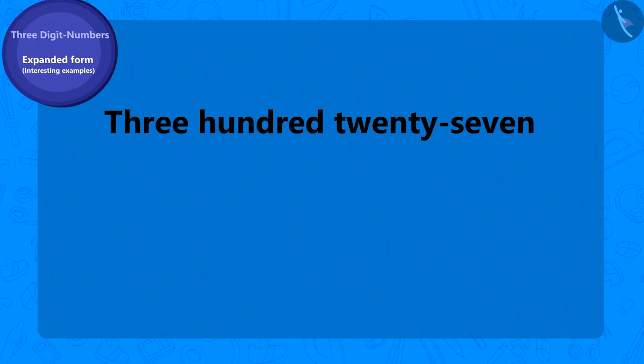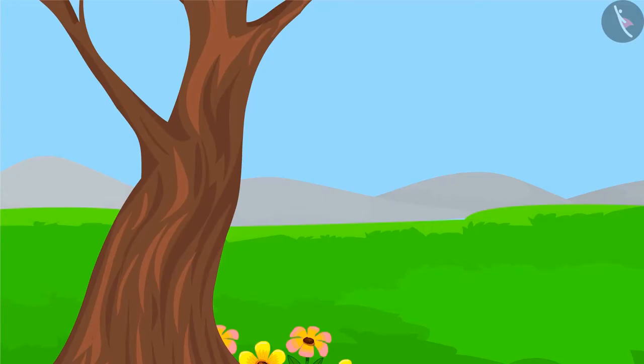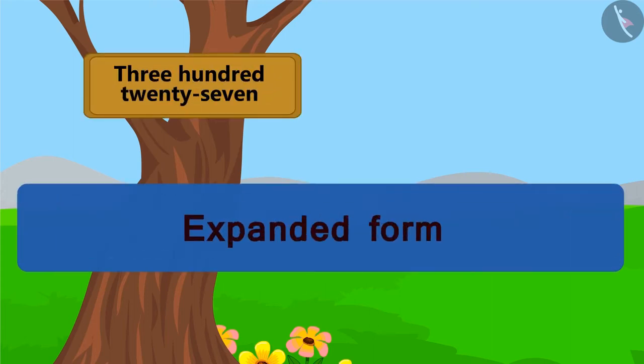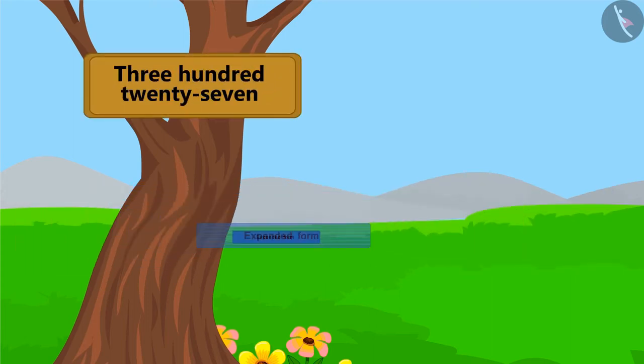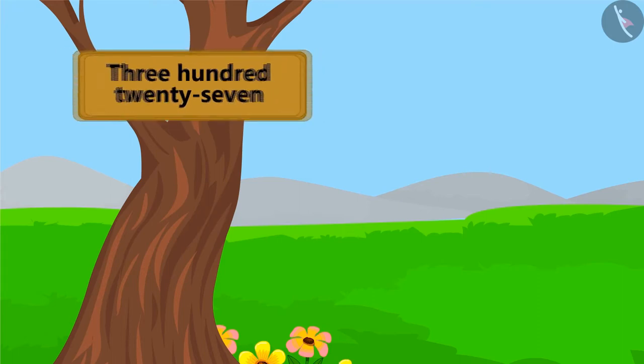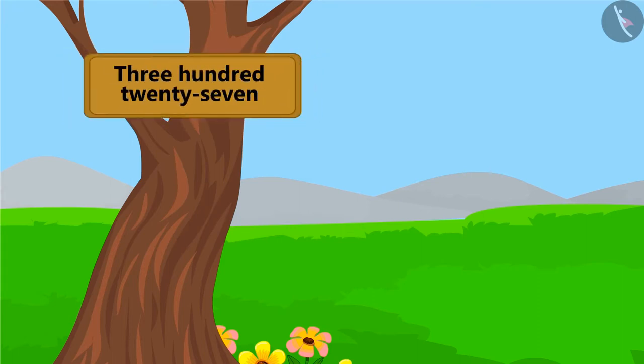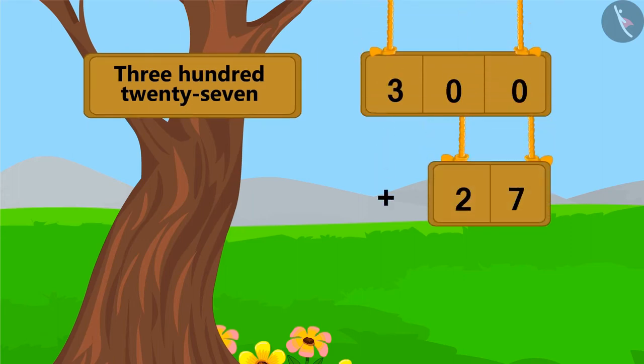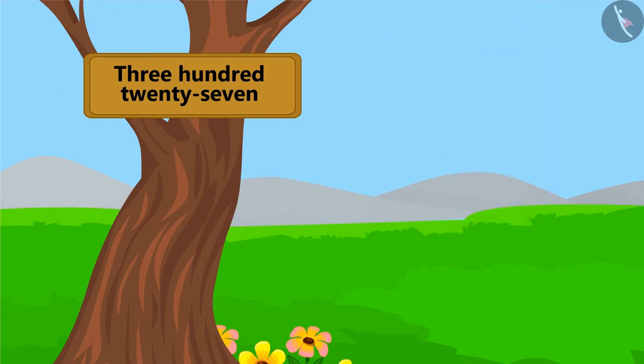Let's see how we can write this number name in its expanded form. Do you remember how to write a number with the help of number name? 327 is 27 ahead of 300, therefore we can write it like this by adding 27 to 300.